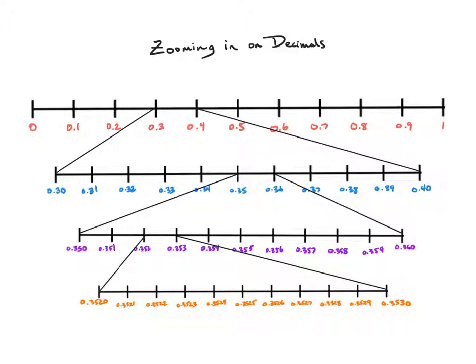As you can see, I can keep zooming in an infinite number of times. No matter what two numbers I choose, there are always more numbers in between those numbers. So let's apply this idea to find the exact midpoint between two decimal numbers.